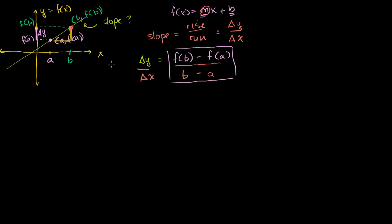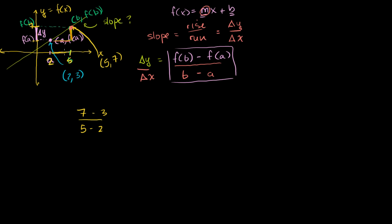That's straightforward, and it comes straight out of Algebra 1. Just to make it concrete: if this was the point (2, 3) and this up here was the point (5, 7), then to find the slope we'd do 7 minus 3 for the change in y, over 5 minus 2 for the change in x. So 7 minus 3 is 4, and 5 minus 2 is 3. Your slope would be 4 over 3.